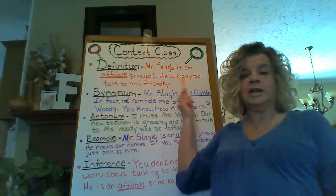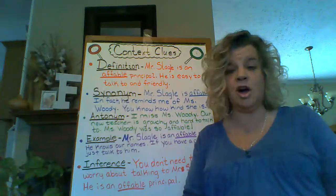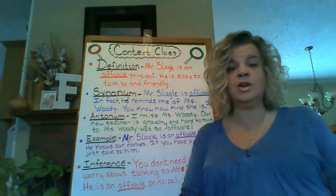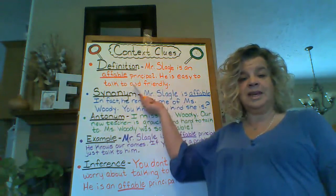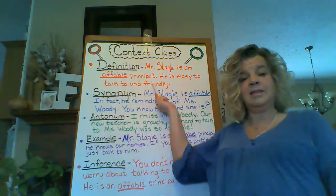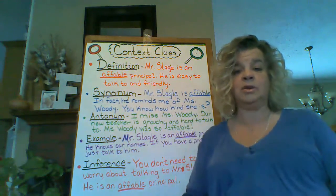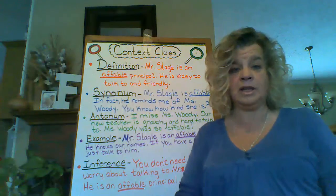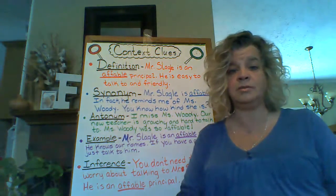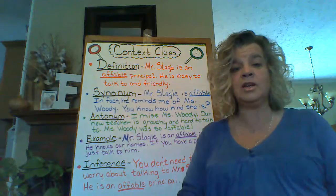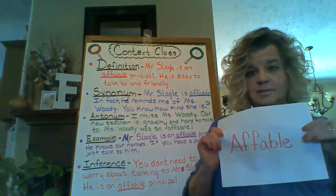So our first sentence is: Mr. Slagle is an affable principal. He is easy to talk to and friendly. So we are talking about Mr. Slagle — he's an affable principal — and then the second sentence just comes out and tells us: he's easy to talk to and friendly. So that gives us the definition of affable.